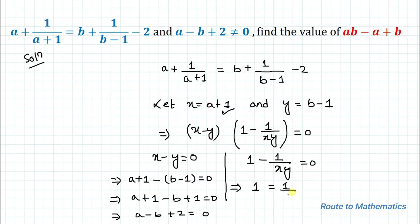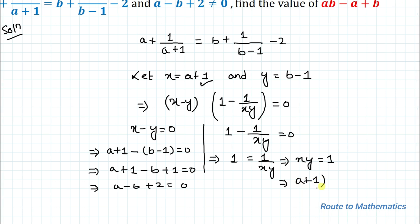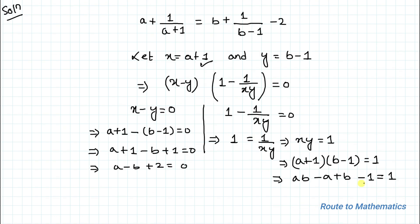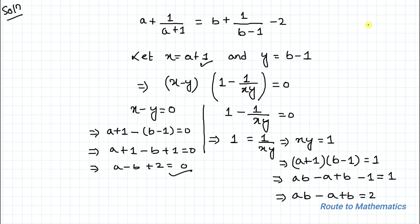For the second case, 1 − 1/(xy) = 0 implies xy = 1. Substituting back, (a + 1)(b − 1) = 1. Expanding and moving terms gives ab − a + b = 2. Now, since it is given that a − b + 2 ≠ 0, the first case is not valid. Therefore, the answer is ab − a + b = 2.